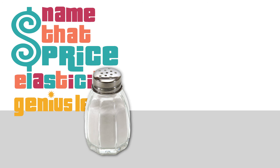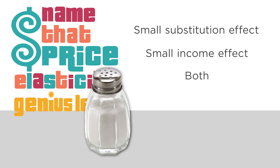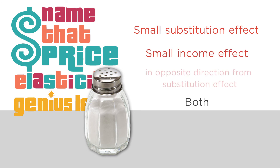Final round: table salt. We already said demand was inelastic. But is this because the substitution effect is small, or the income effect is small, or both? The substitution effect is small — if the price of salt goes up, there aren't really any good substitutes. It's such a basic ingredient; you need some in your diet to live, and it's delicious. Table salt is an inferior good — as you get poorer, you may consume more of it, because you cook more meals at home or need more to spice up cheaper food. So if the price goes up, not only is the substitution effect small, but the income effect actually undoes some of it, causing you to consume a bit more. That explains why the price elasticity of demand for salt is so small: tiny substitution effect, and even that gets partially undone by the income effect.